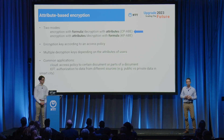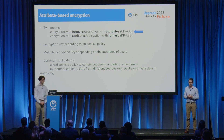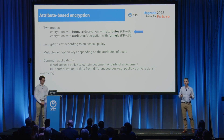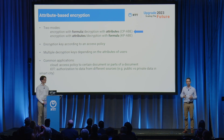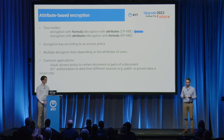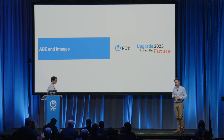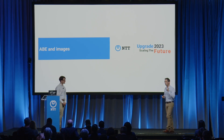That is a way of using ABE — attribute-based encryption — the approach we use in our idea. We have one encryption key and multiple secret keys, multiple decryption keys. A usual application is for data in databases, where you can encrypt rows or columns that contain sensitive data according to some policies. Another common application is in IoT, where sensors provide information that can be encrypted. Now let's see how we can use ABE in images.